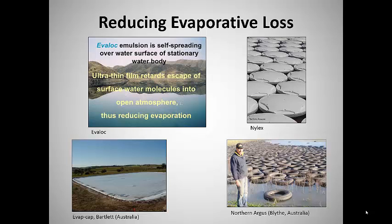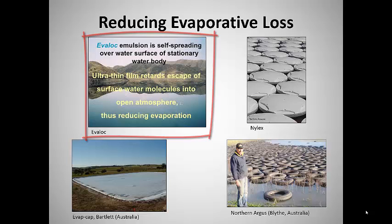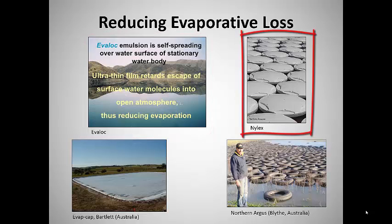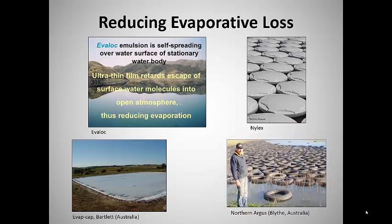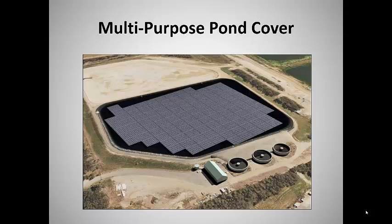Reducing evaporative loss from standing water is a conservation practice that is sometimes used, where it will not interfere with other uses of the pond or lake. The water surface can be covered with a thin emulsion of a non-toxic chemical, or with polypropylene discs, or polyethylene plastic sheets, or old tires filled with polystyrene. One plan for a pond cover near Jamestown, Australia includes a design for a multipurpose cover that generates solar electricity while at the same time reducing evaporation.